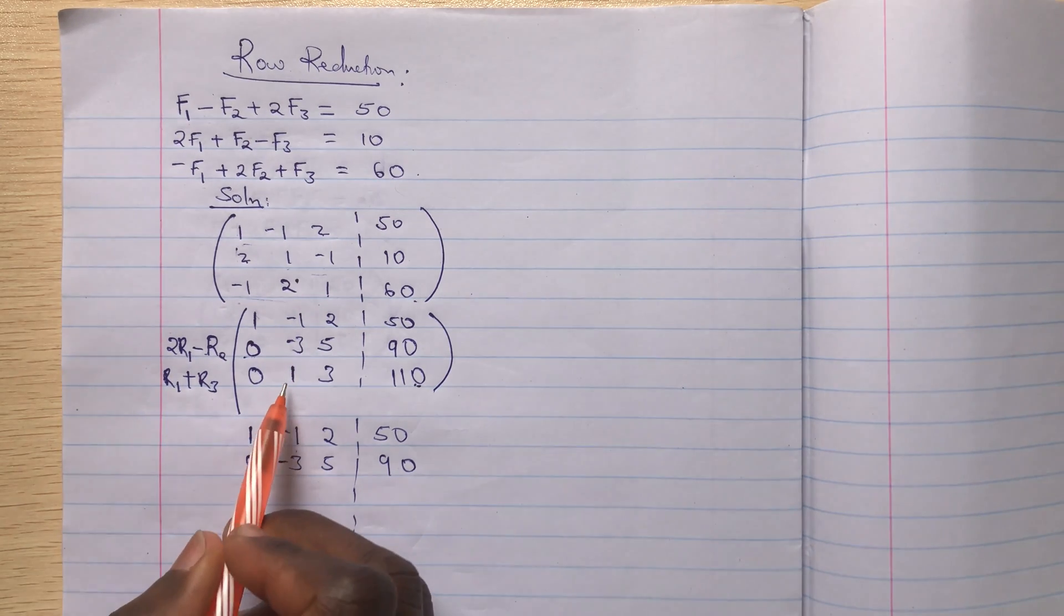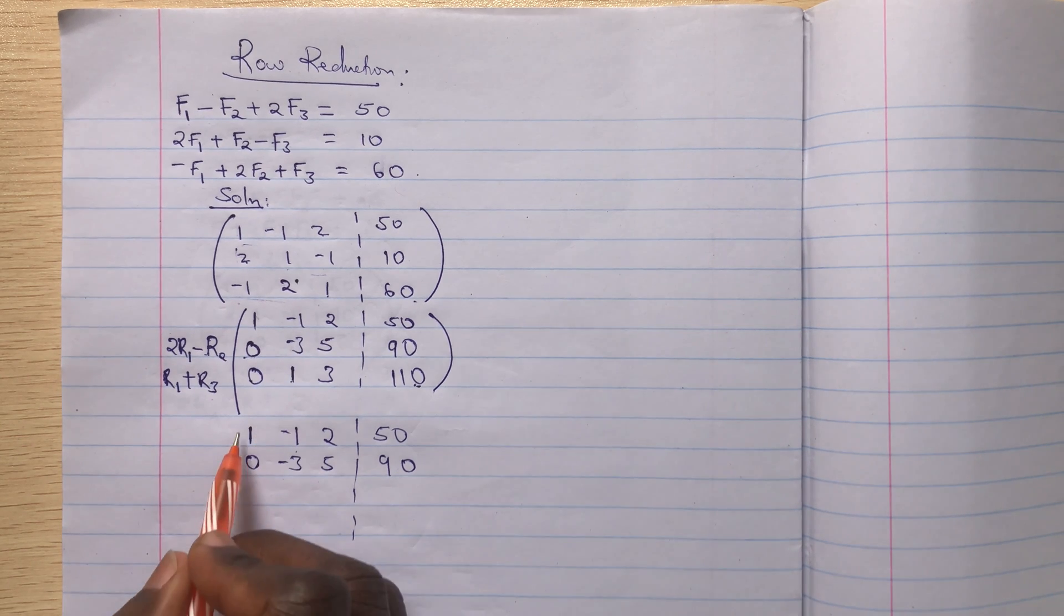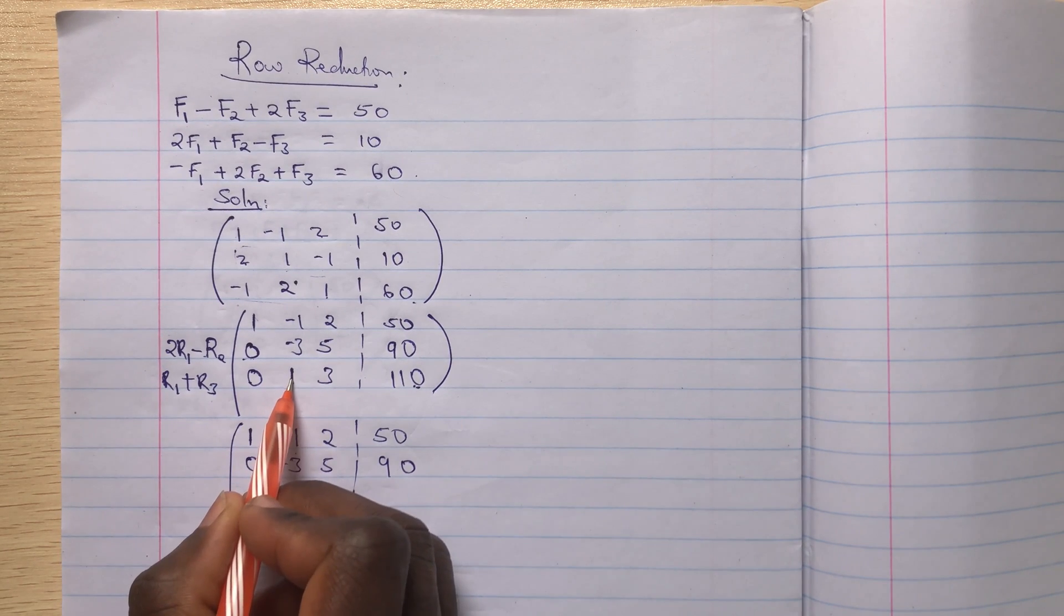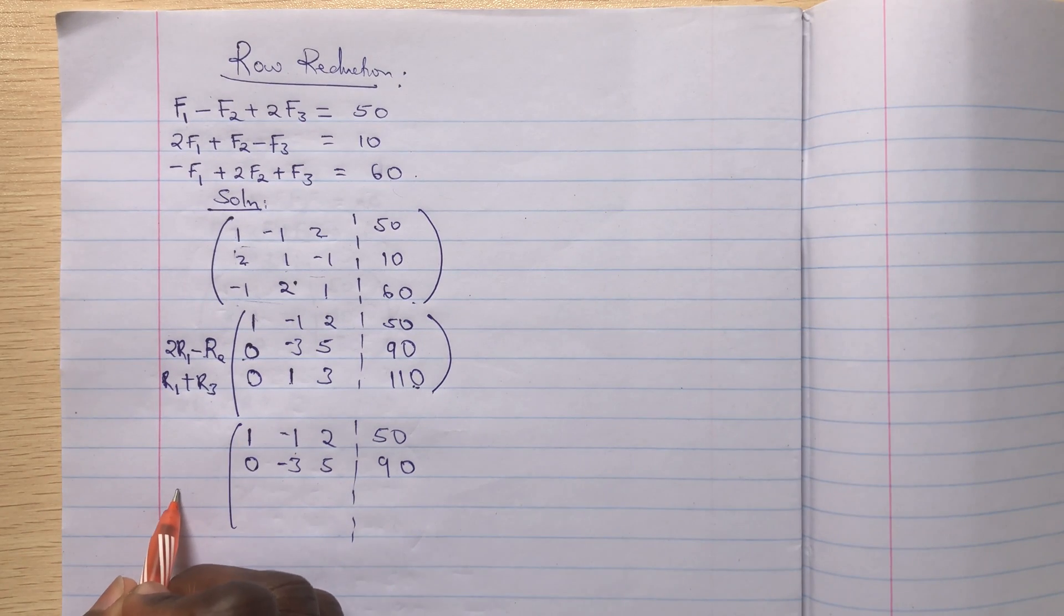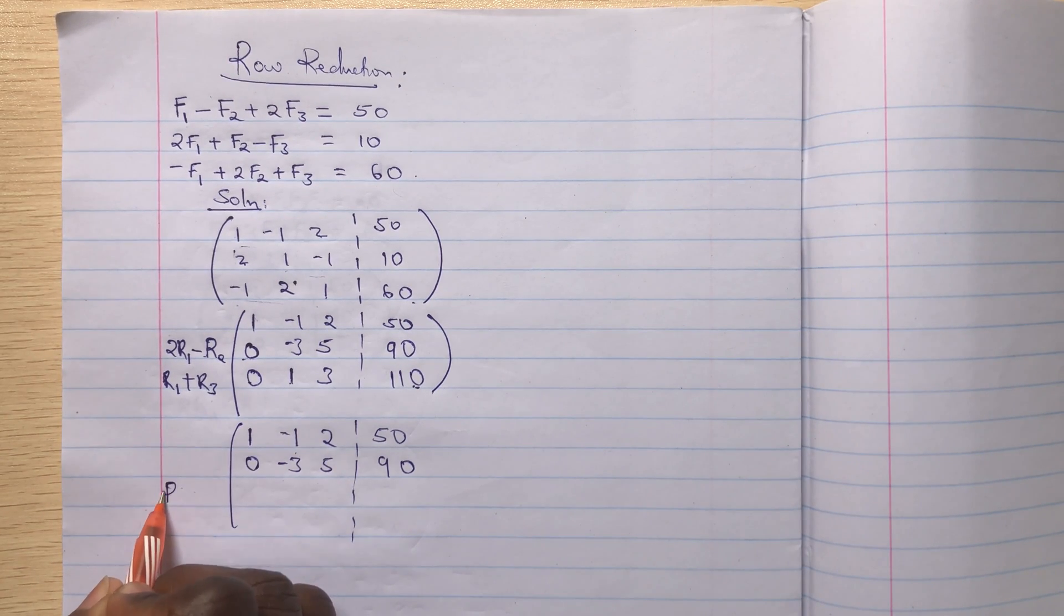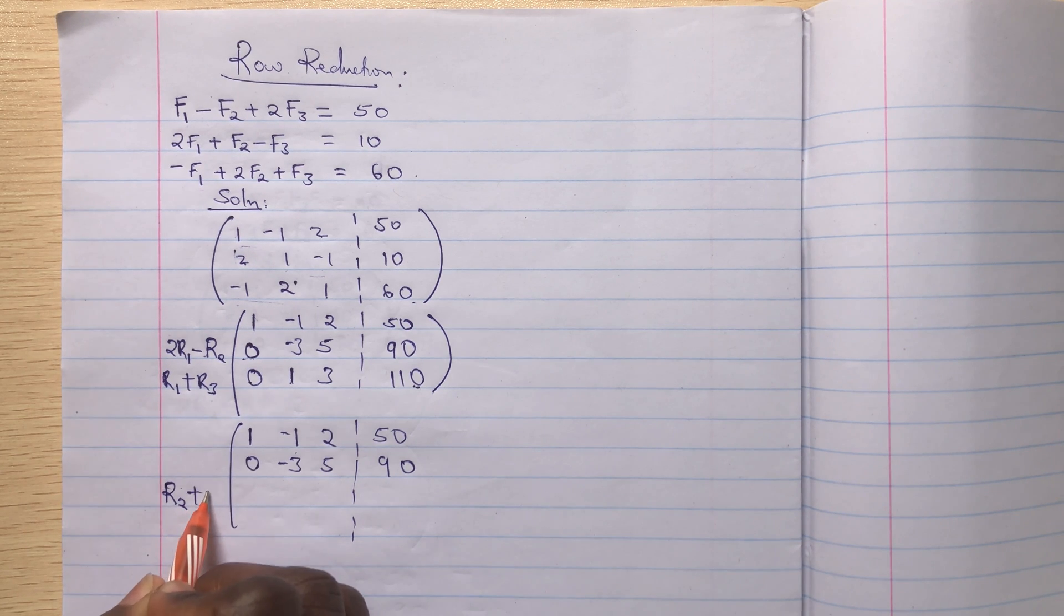So what we'll do, looking at the coefficient here, I'll have 1 and 3. So I'll multiply this by 3 and add to this. So this means I'll have rho 2 plus 3 rho 3.